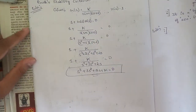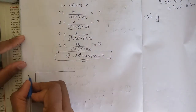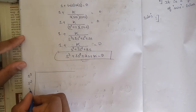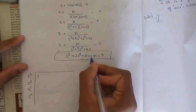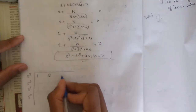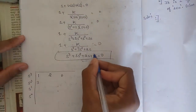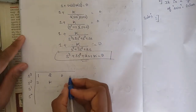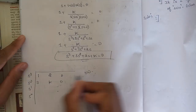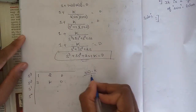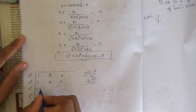Now we write the Routh array. For s³: coefficient 1, skip one term, coefficient of s is 2. For s²: coefficient 3, skip one term, then K. Now compute the s¹ row element: (3×2 − K×1) / 3 = (6 − K) / 3.